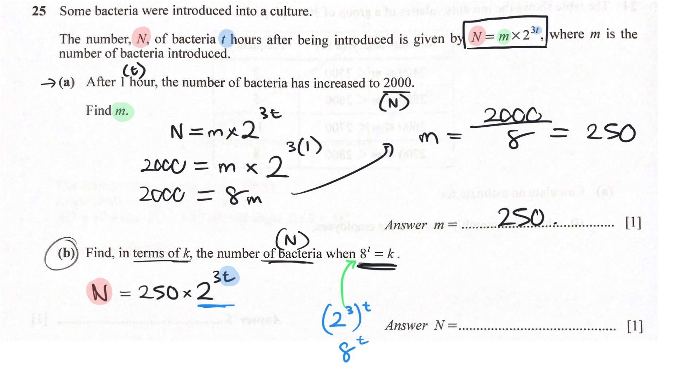Okay, and I'm going to replace it with K. So writing it out fully, we have N, the number of bacteria we're going to find is 250, replacing 2 power 3T with K, simply K, which is 250K. A very simple expression to show the number of bacteria that is left.